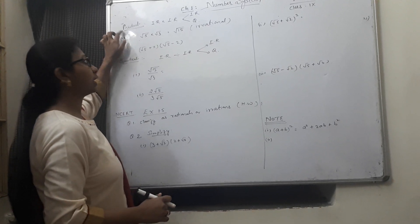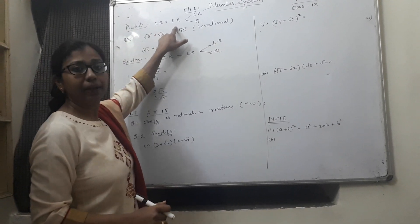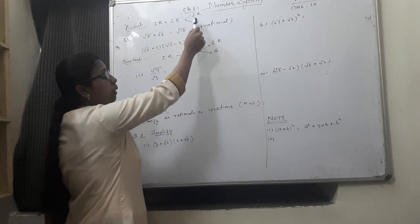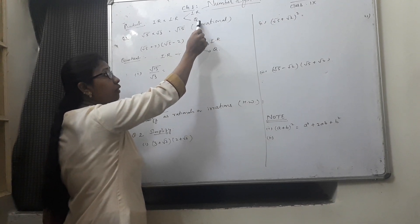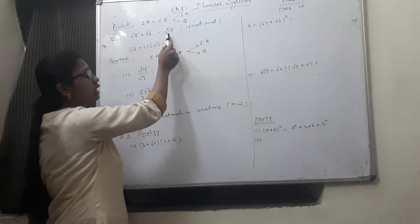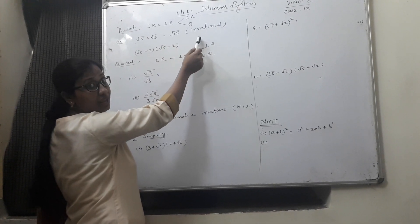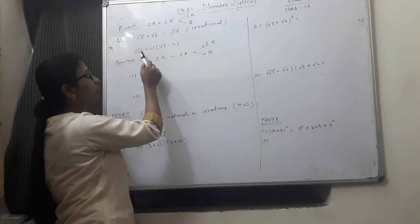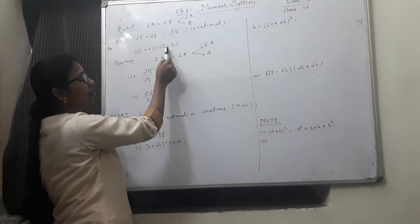The third part is product. Product of 2 irrational numbers can again be irrational or rational. For example, root 5 into root 3 is root 15 which is clearly an irrational number. But root 5 plus 2 root 5 minus 2.